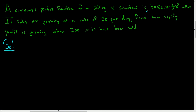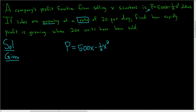We're given the profit function, so let's write that down: P is equal to 500X minus one half X squared. We're also told that sales are growing at a rate of 20 per day. The key word here is rate — that's a derivative. If X is the number of scooters being sold, then the derivative of X with respect to time, dX/dt, is equal to 20.